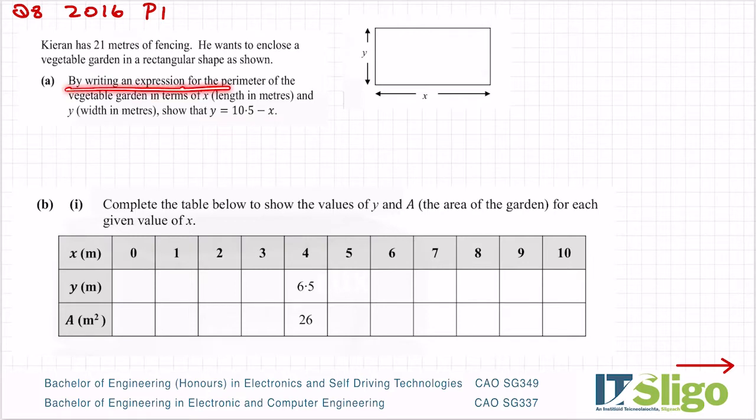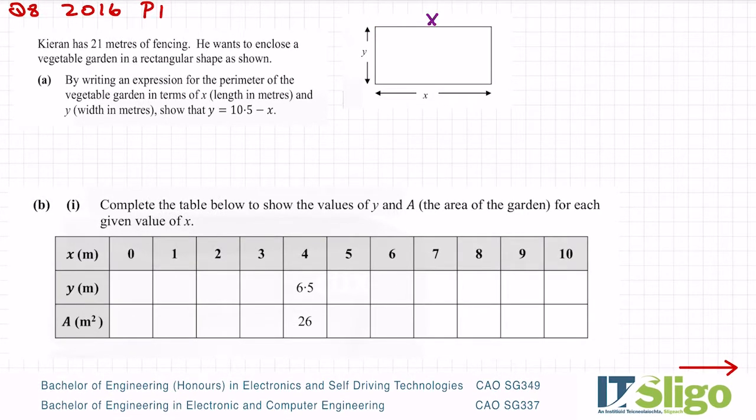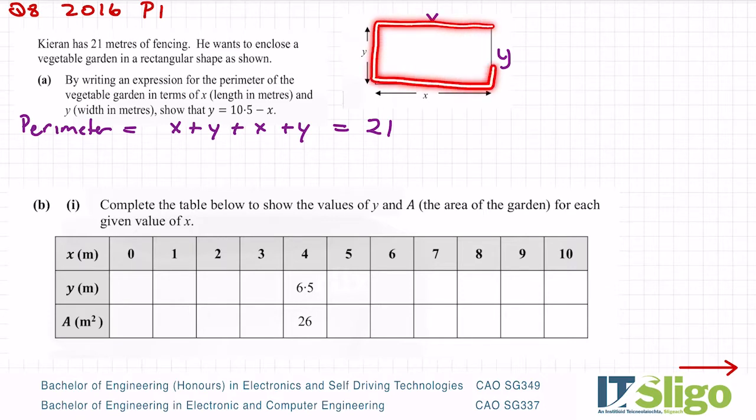So by writing an expression for the perimeter of the vegetable garden. Okay, so perimeter is adding up the outside, walking around the outside of your shape. So it's a rectangle, so we're going to add all the sides. If the bottom is x, the top is also x, and if the side is y, the side is also y. Okay, so the perimeter is equal to x plus y plus x plus y, and we're assuming he uses all 21 meters of fencing. I walked: there was an x, there was a y, there was an x, there was a y.